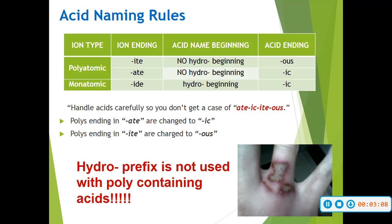Acid naming rules: if you have a polyatomic and you have a hydrogen in front of it, that's going to be an acid. Now, if your polyatomic ends in ITE, you are not going to use hydrogen or hydro as a prefix, but you are going to change the ending to OUS. If your polyatomic ends in ATE, again no hydro in the beginning, and you are going to change the ending to IC.